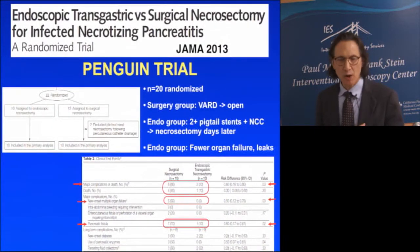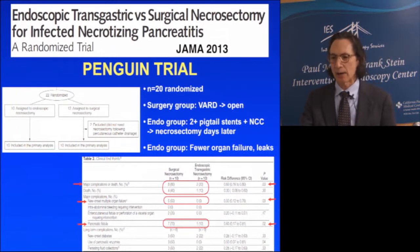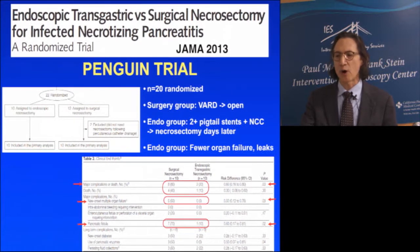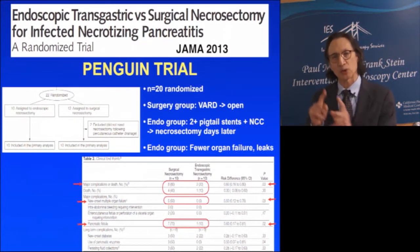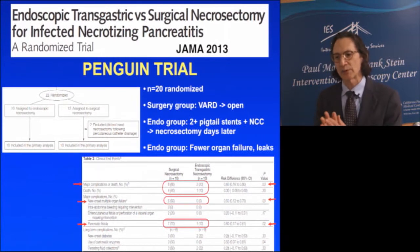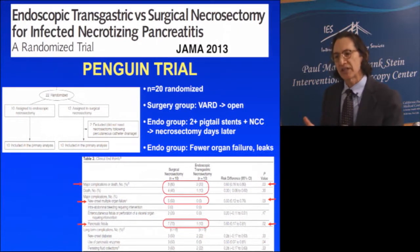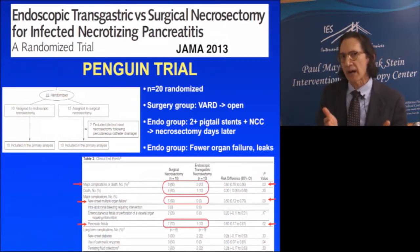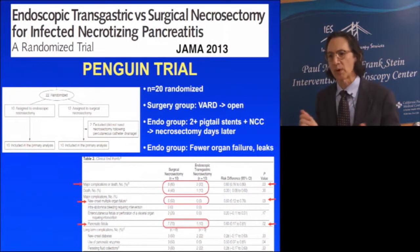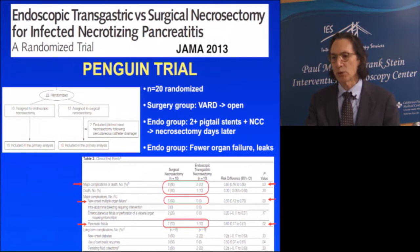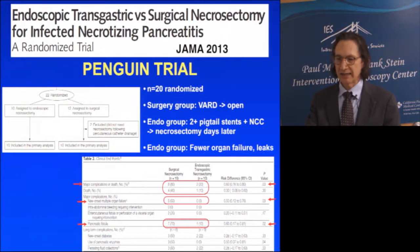The PENGWIN trial was a small trial of 20 patients randomized, 10 in each group. The surgery group went from VARD to open. The endoscopic group had two pigtail stents plus nasal cystic catheter irrigation, and all patients underwent necrosectomy several days later — an apples-to-apples comparison of surgical versus endoscopic necrosectomy. In the endoscopic group, there were significantly fewer organ failures and fewer leaks.